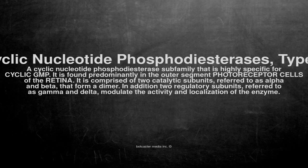It is comprised of two catalytic subunits, referred to as alpha and beta, that form a dimer. In addition, regulatory subunits, referred to as gamma and delta, modulate the activity and localization of the enzyme.